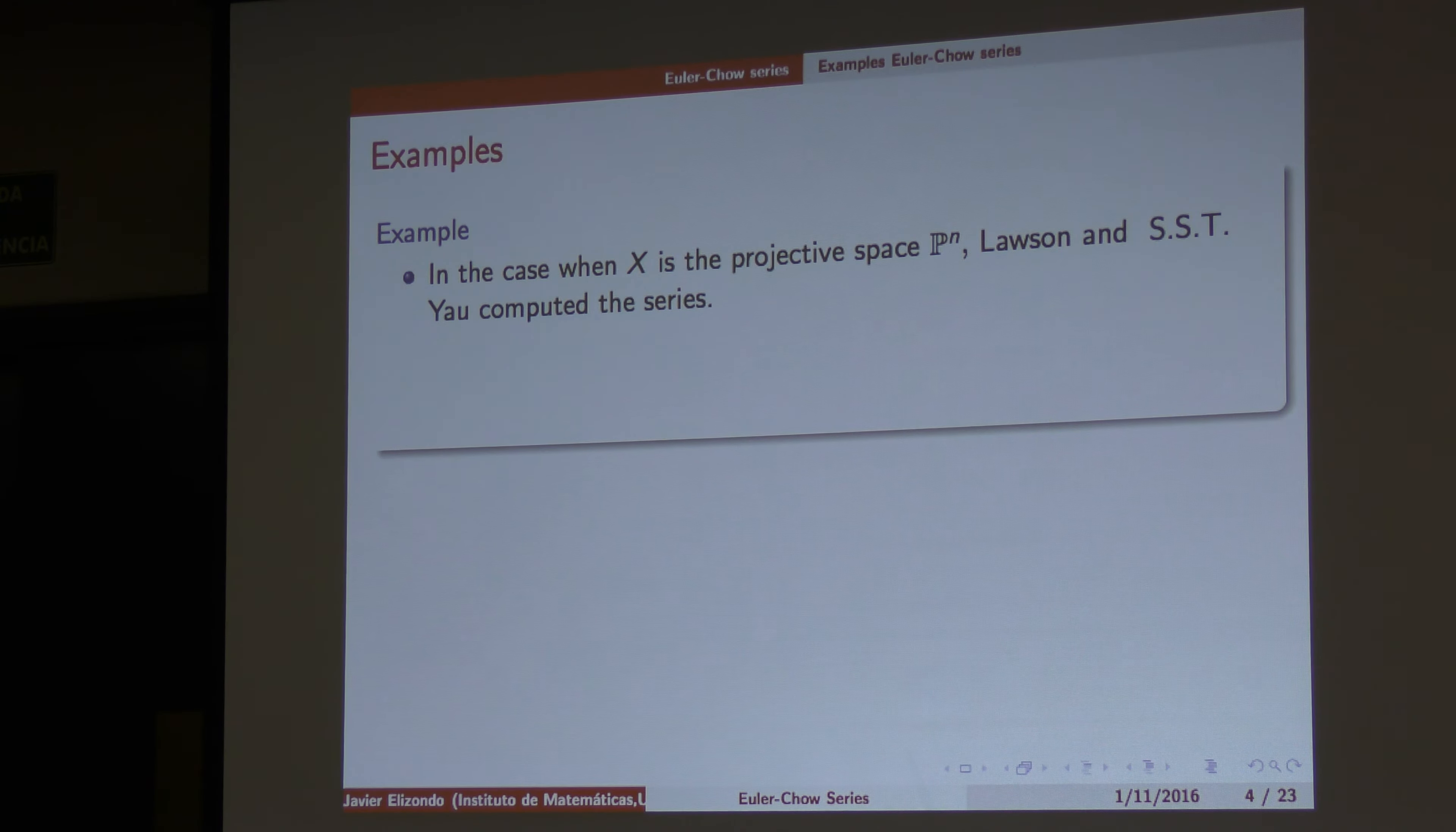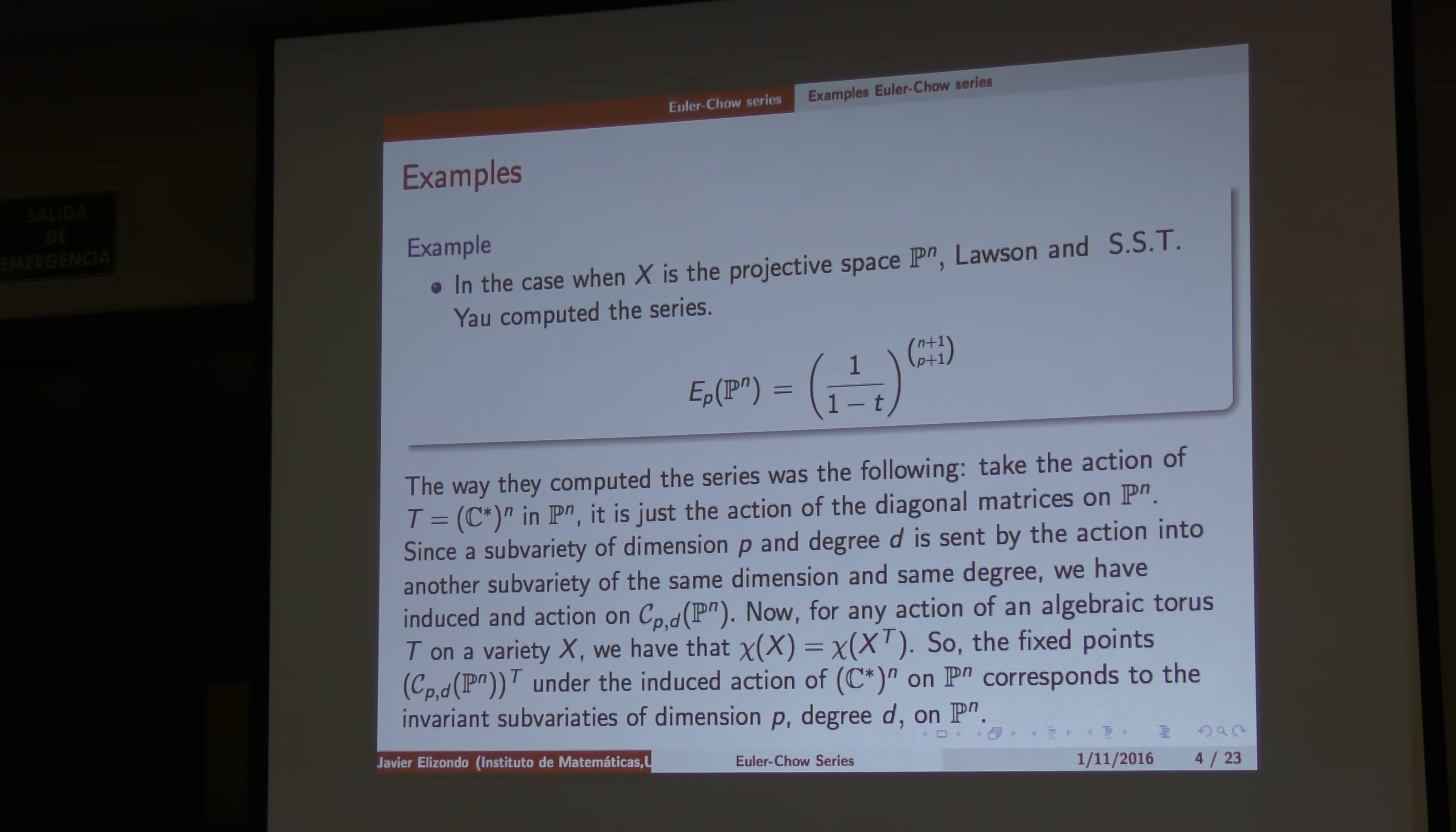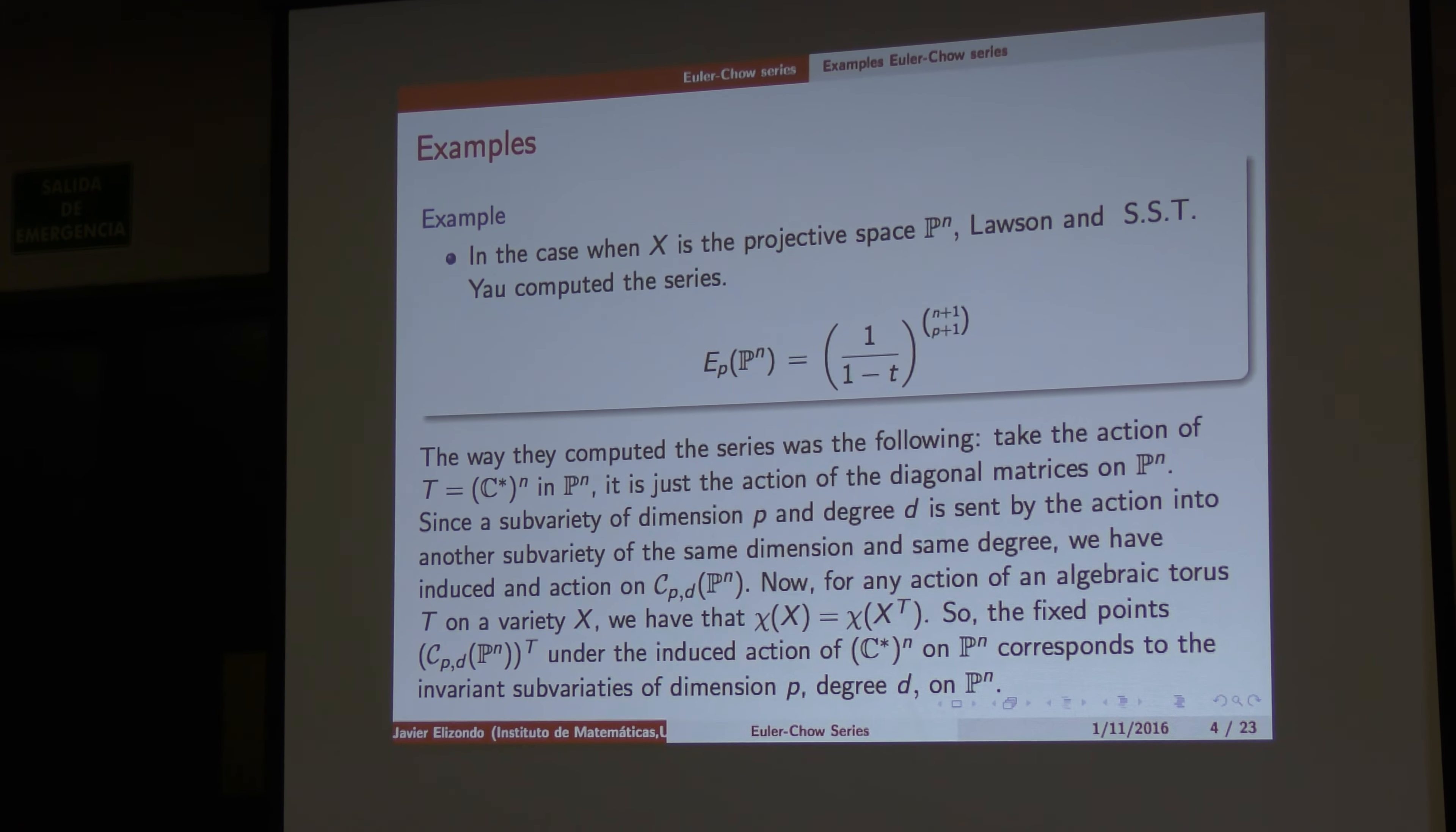It's very hard to find out when the Euler characteristic series is a rational function. When X is the projective space, Blaine Lawson and Stephen Yau compute the series. And they got this. In dimension P, you got this one.